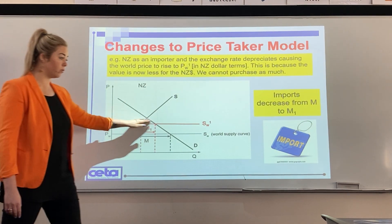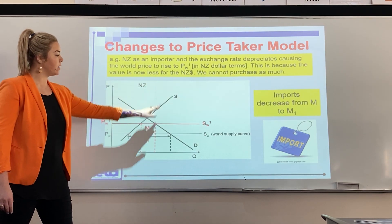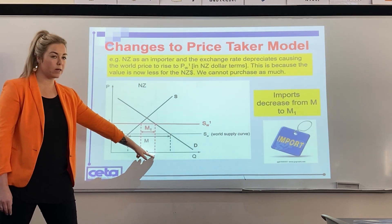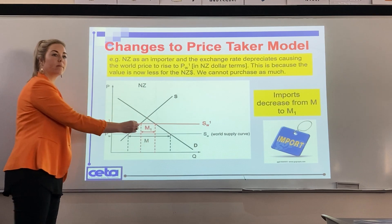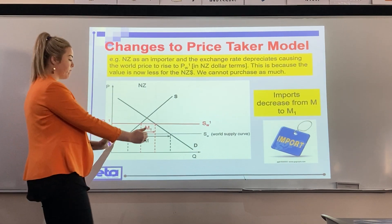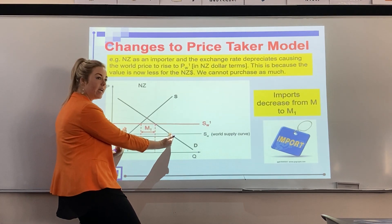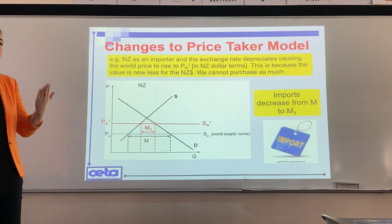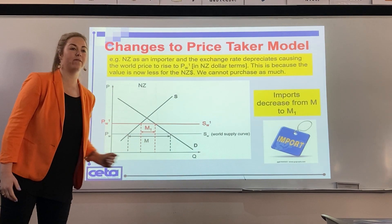Draw the new world price line, then identify the new quantities: Q, S, NZ1 and Q, D, NZ1. The amount we need to import has therefore decreased. We've moved from the original importing gap to a smaller gap. The price has gone up, so we're not going to purchase as much because it's not as affordable, and supply and demand have also changed accordingly.